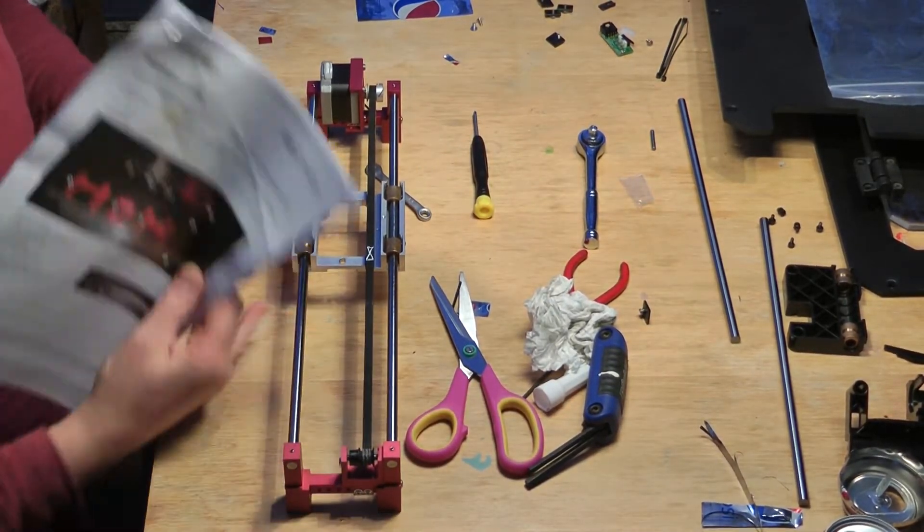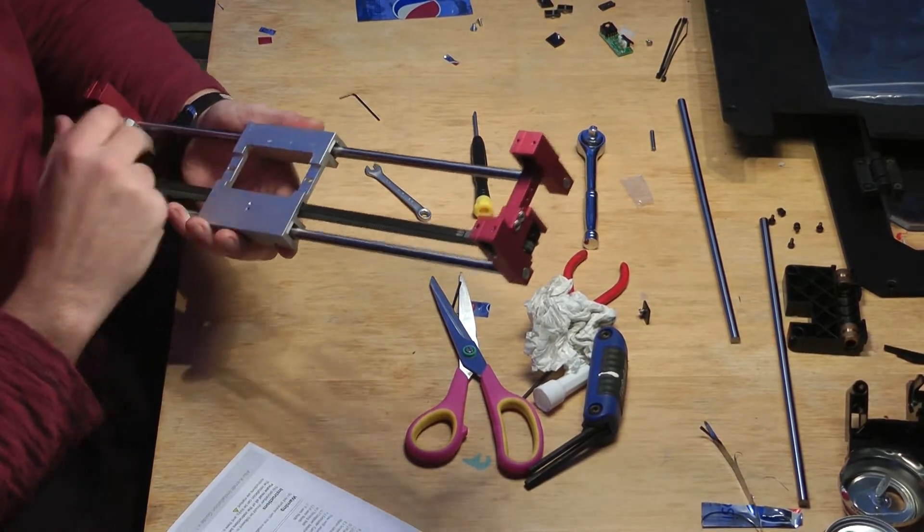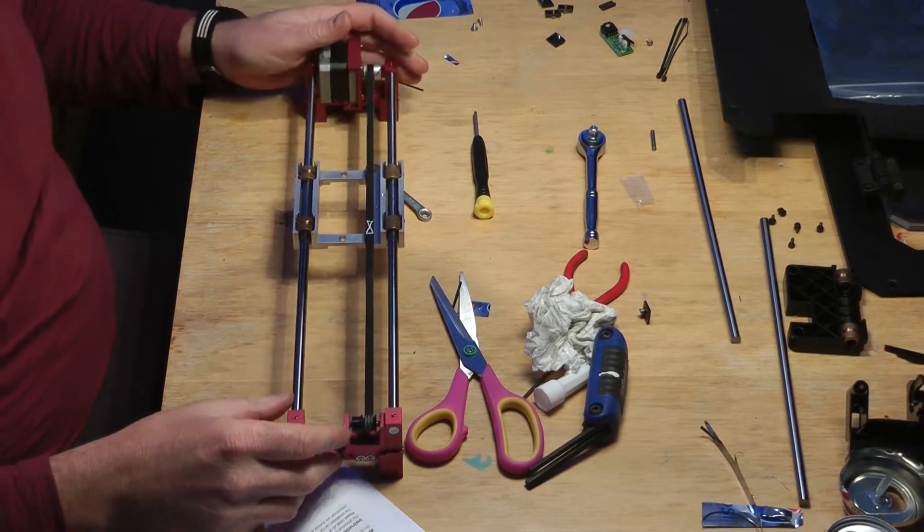I've also got Carl's aluminum carriage on here, which is aluminum as you can see. It's a replacement for the MakerBot Classic one.